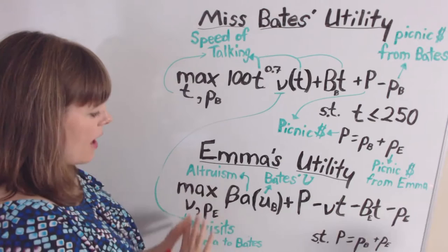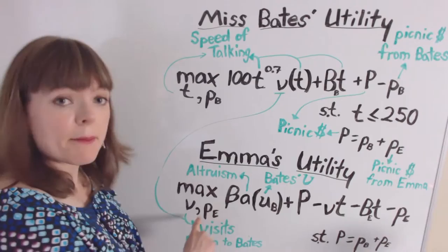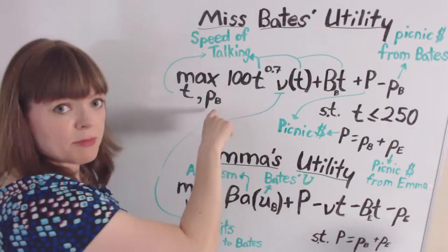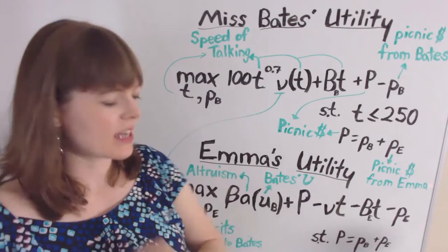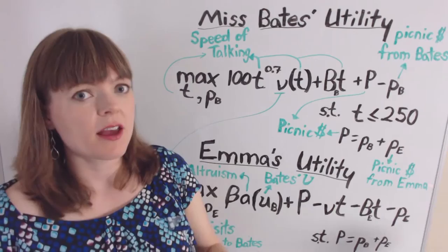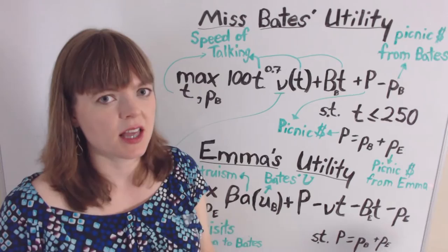Emma is also choosing two things. Like Miss Bates, Emma chooses her financial contribution to the picnic. But Emma's other choice variable is how often to visit Miss Bates. Emma is a rich woman in this town, 21 years old. Miss Bates is in her 40s, never got married, and used to be rich but is now kind of middle class, with a lot of pity attached to that.